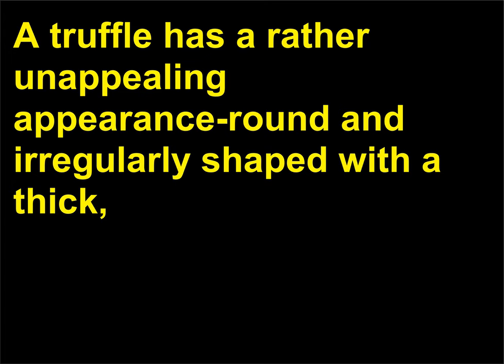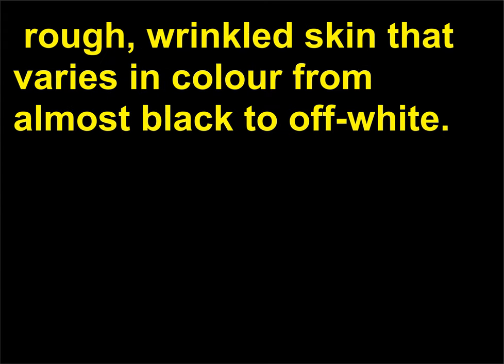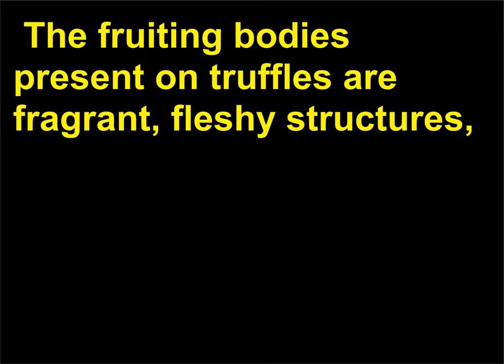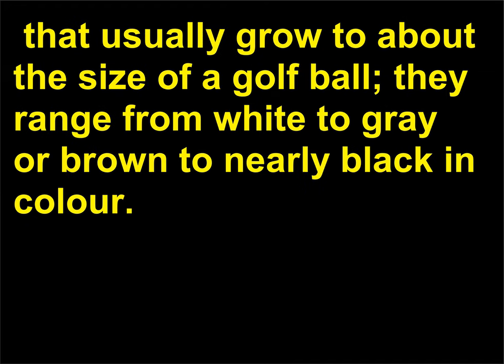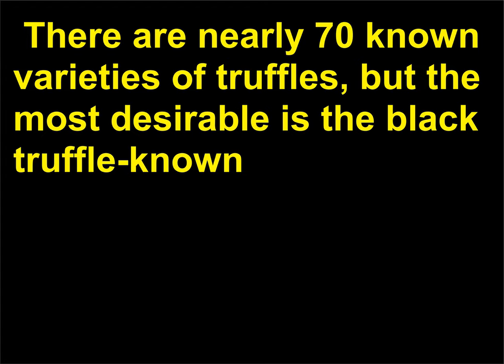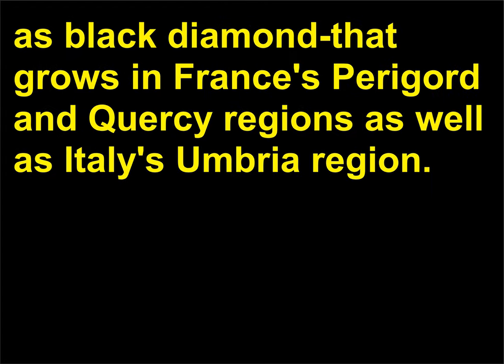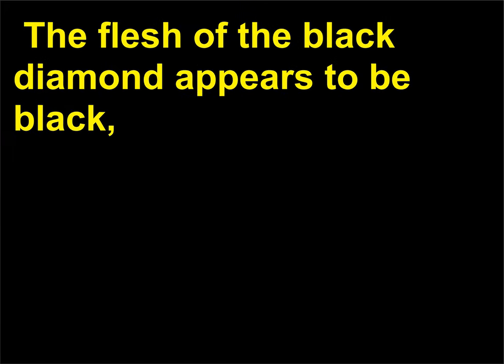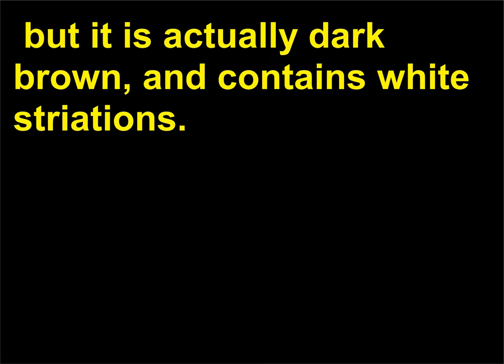A truffle has a rather unappealing appearance — round and irregularly shaped with a thick, rough, wrinkled skin that varies in color from almost black to off-white. The fruiting bodies present on truffles are fragrant, fleshy structures that usually grow to about the size of a golf ball, ranging from white to gray or brown to nearly black in color. There are nearly 70 known varieties of truffles, but the most desirable is the black truffle, known as black diamond, that grows in France's Périgord and Corsica regions as well as Italy's Umbria region.